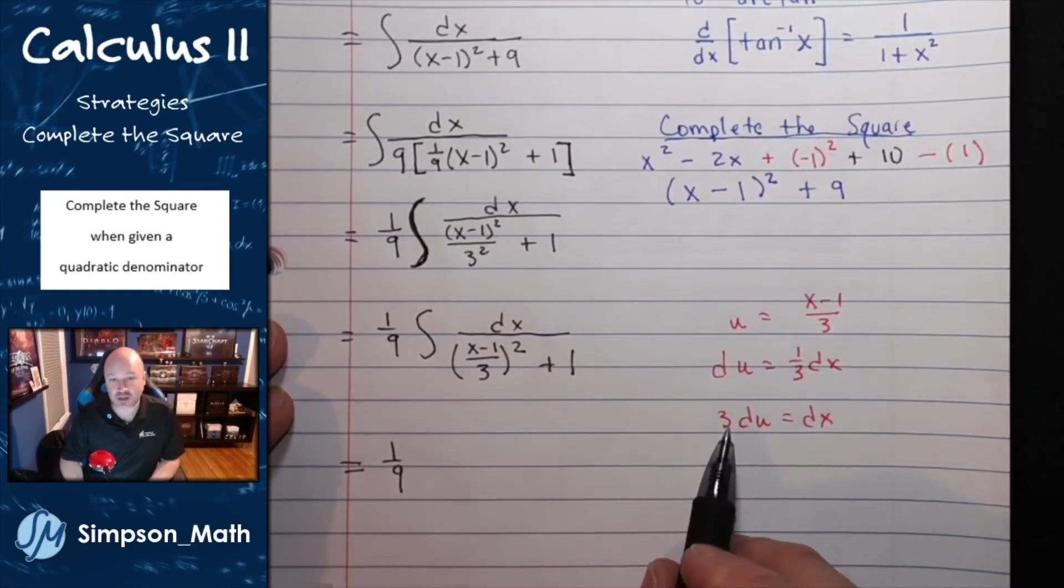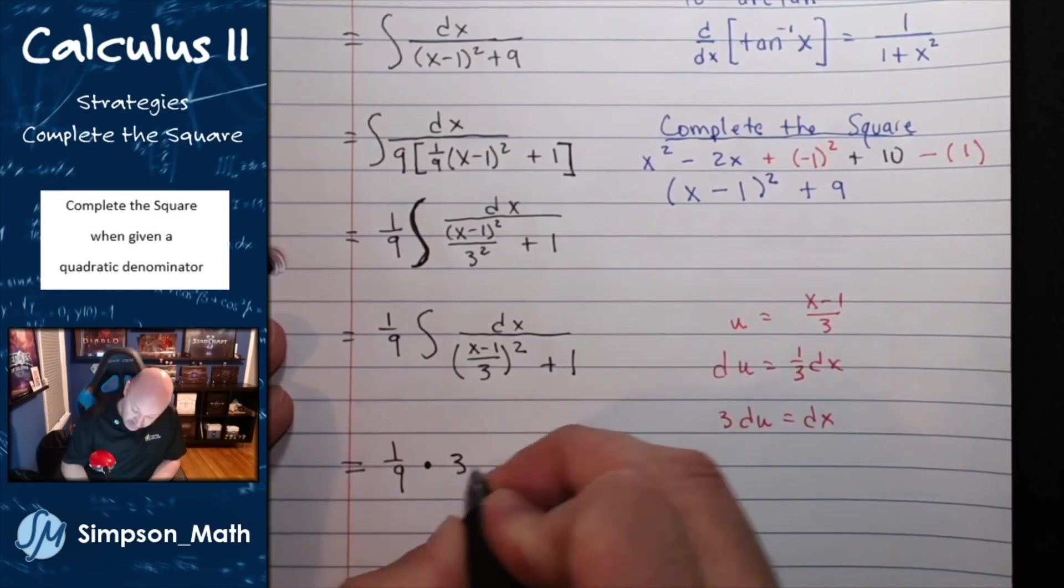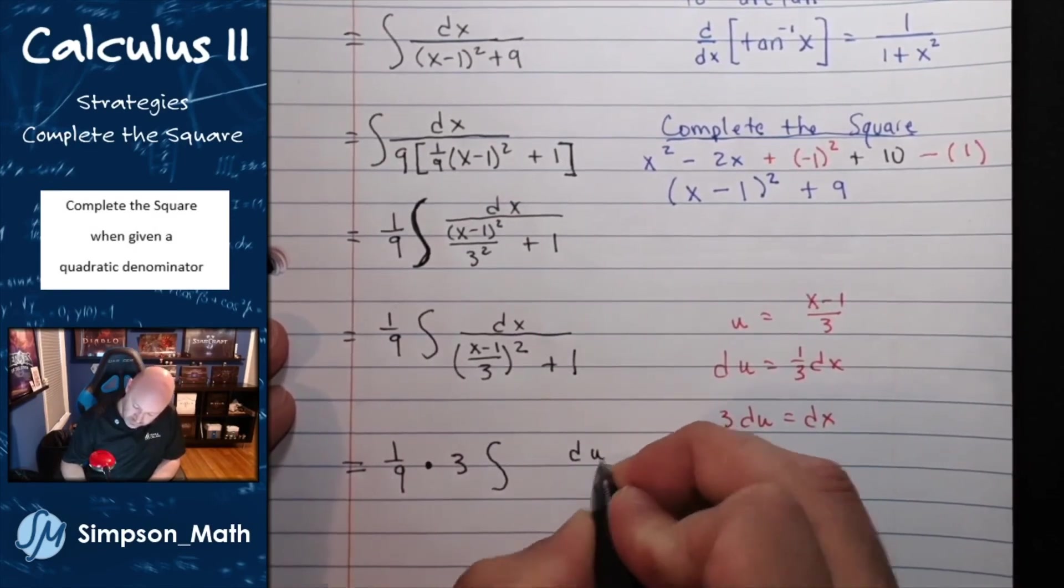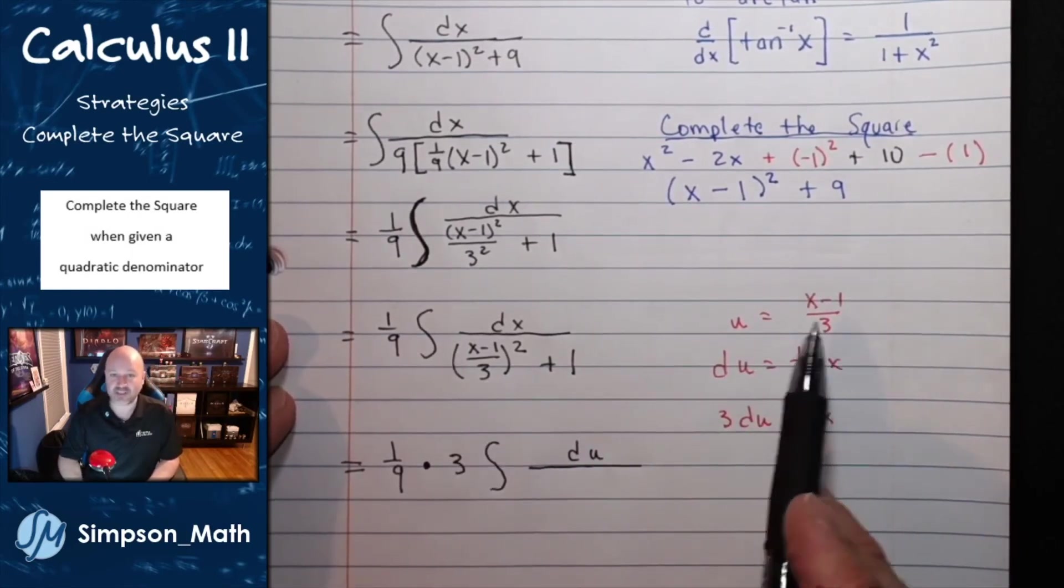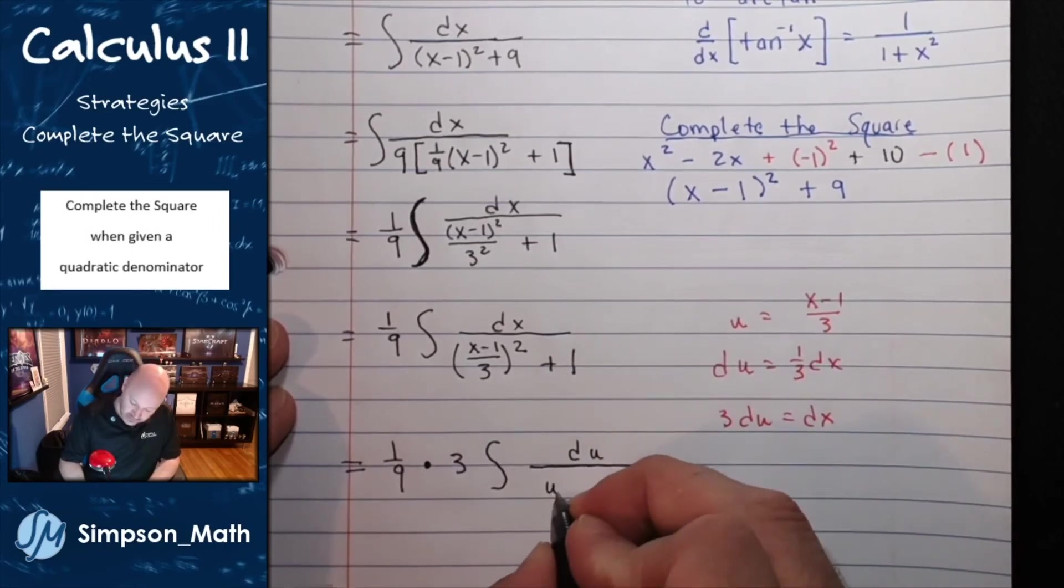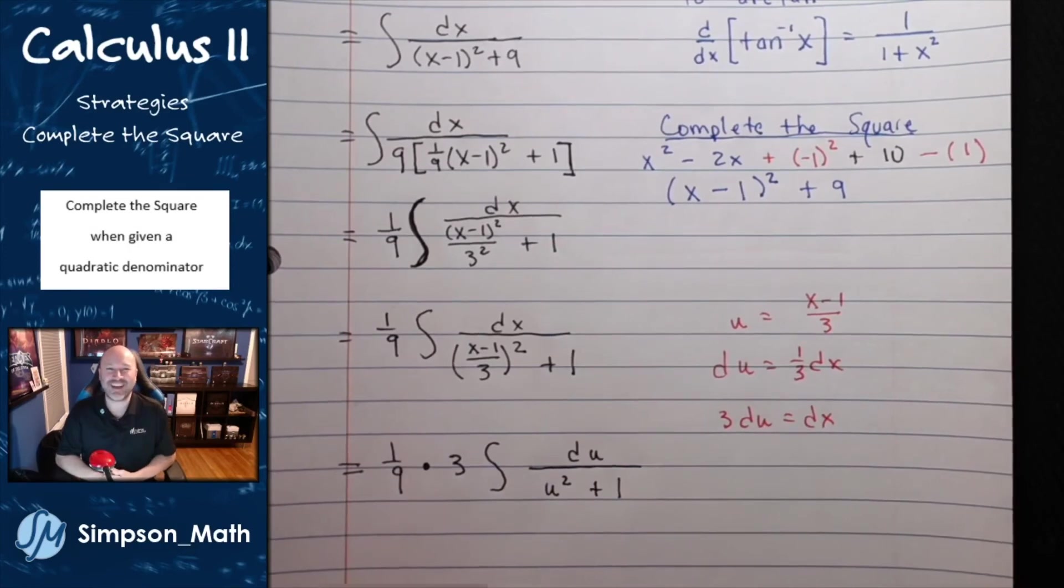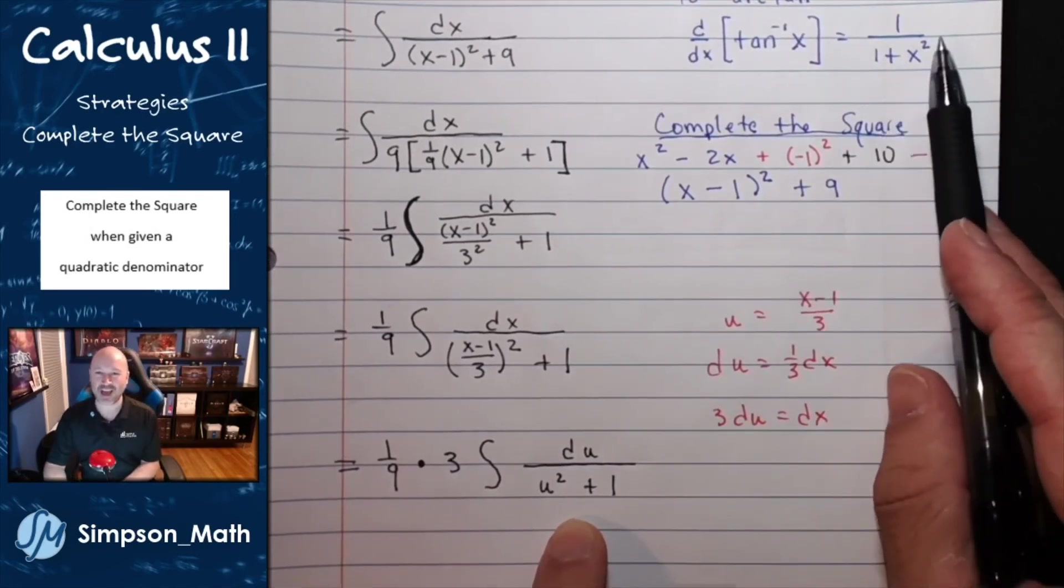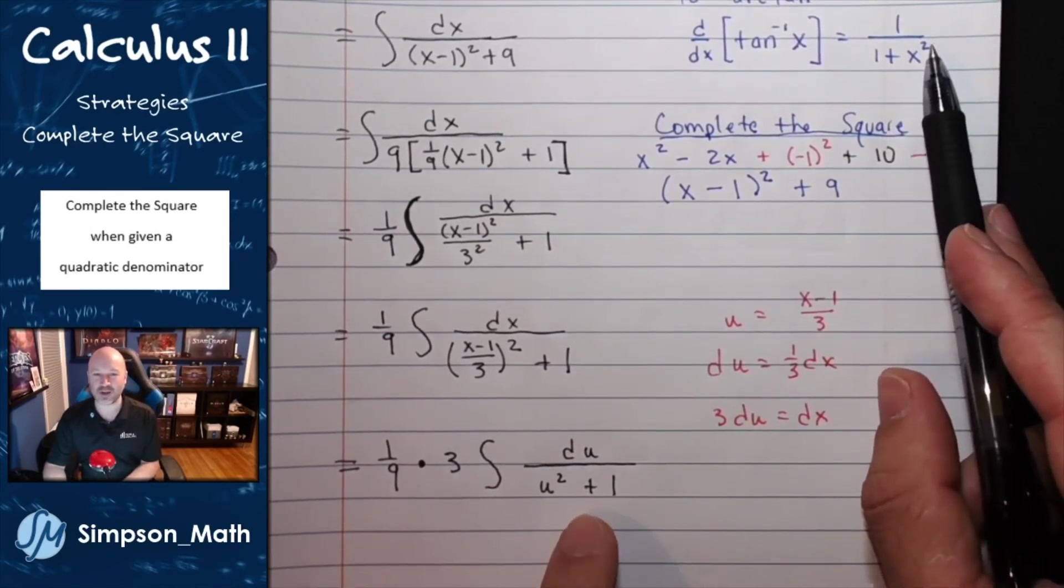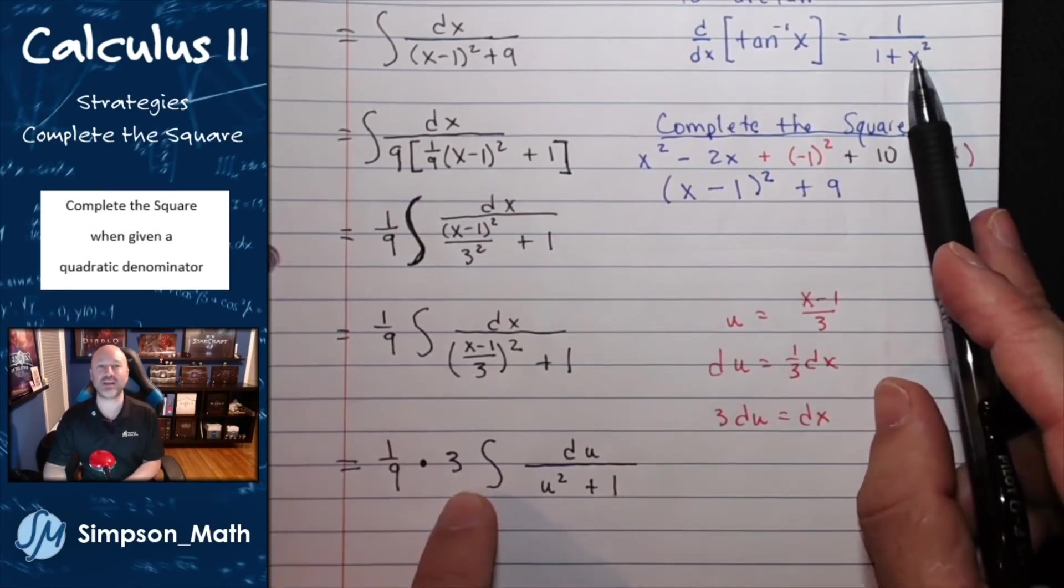I'm going to pull the 3 of the 3du completely out of the integration process. This fraction is just a fancy way of saying u. So I have u squared plus 1. Alright, that was some fancy footwork. But maybe now you see what I saw from the beginning. I have 1 over 1 plus u squared. This is just arctangent when we integrate it.